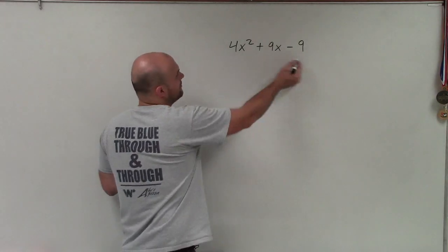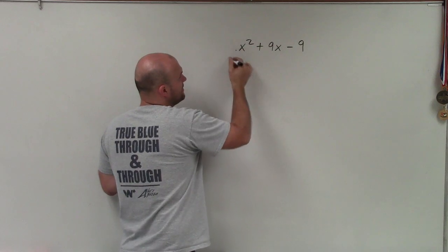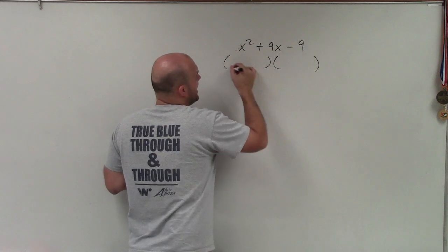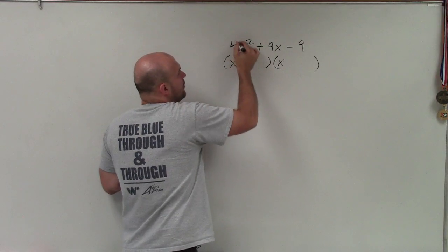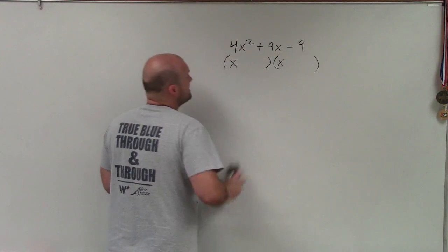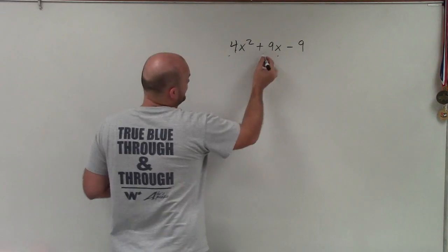Previously when we were factoring trinomials without a coefficient, we knew that the two factors had to start with x times x, because x times x gave us x squared. But now with 4x squared, x times x does not give me 4x squared. So I have two options here.